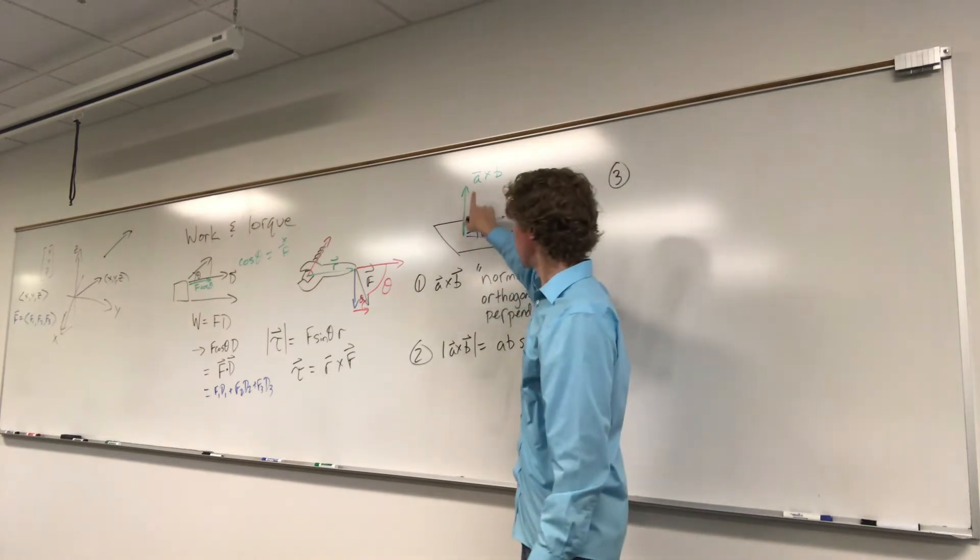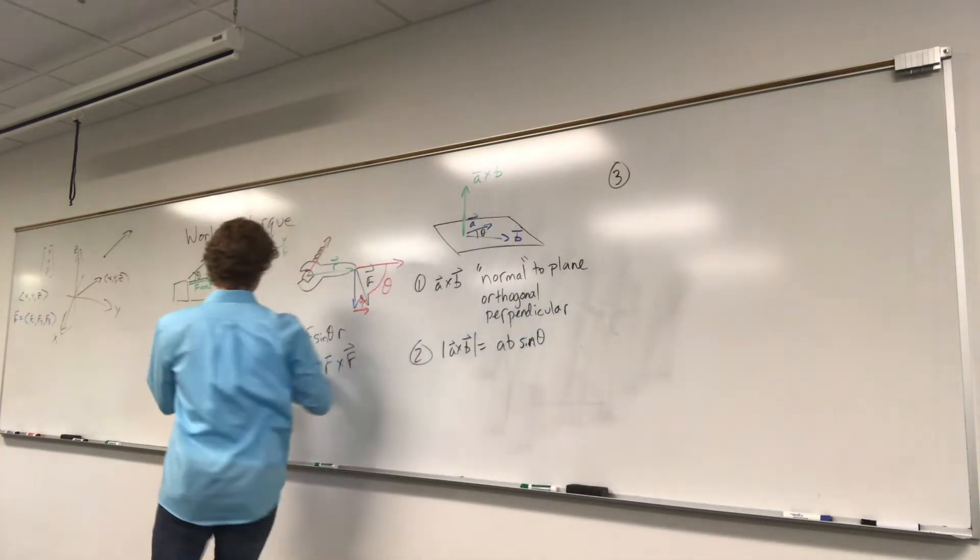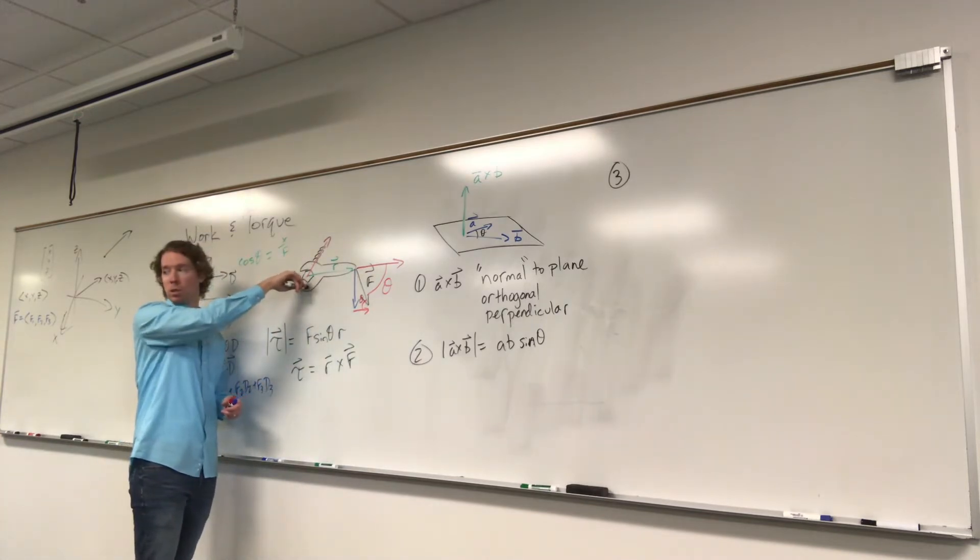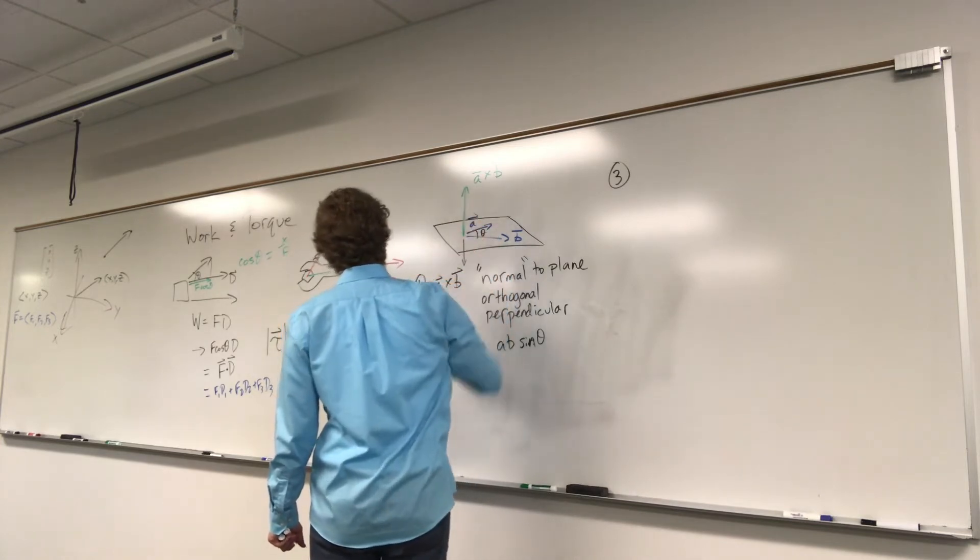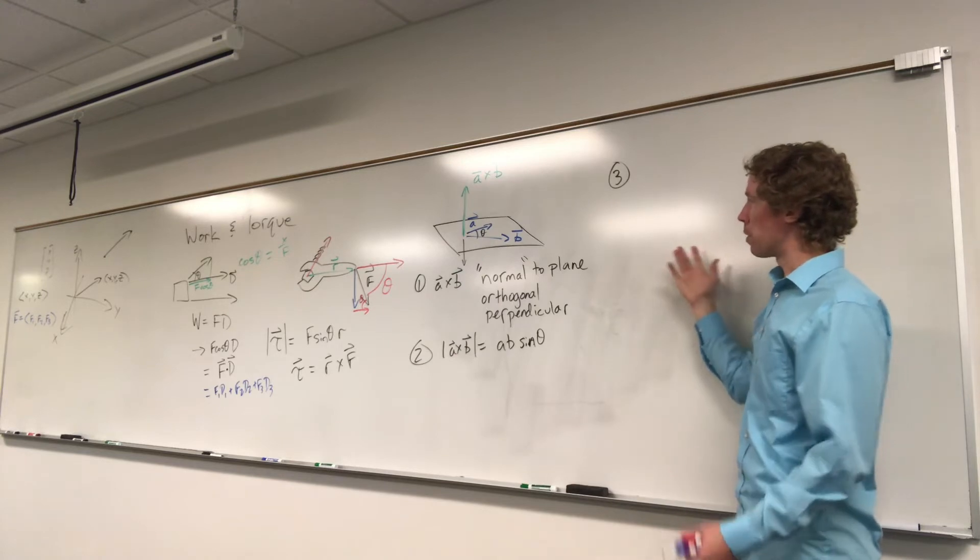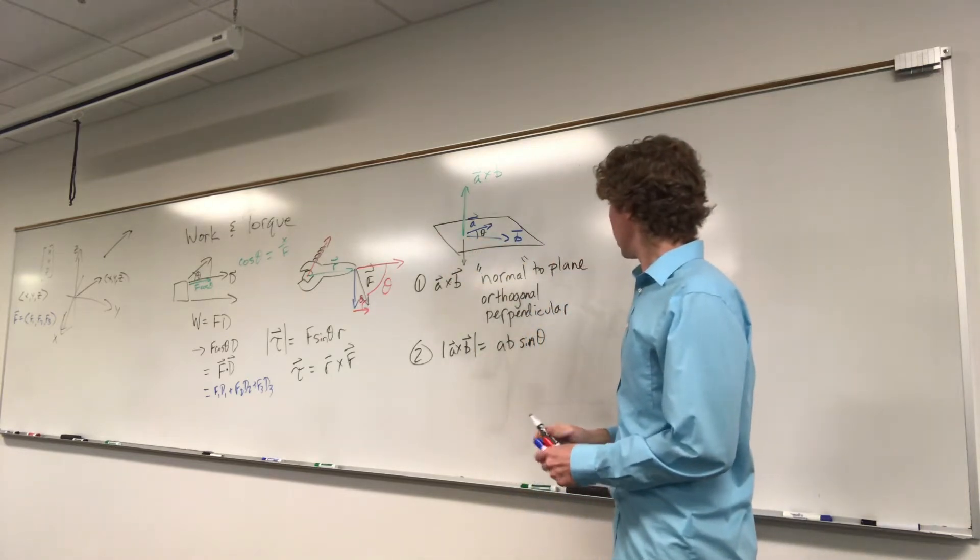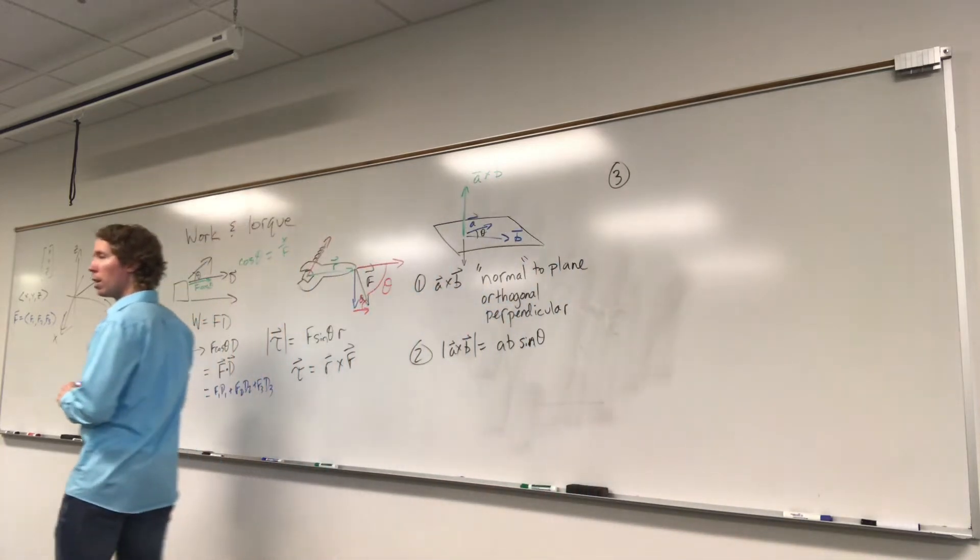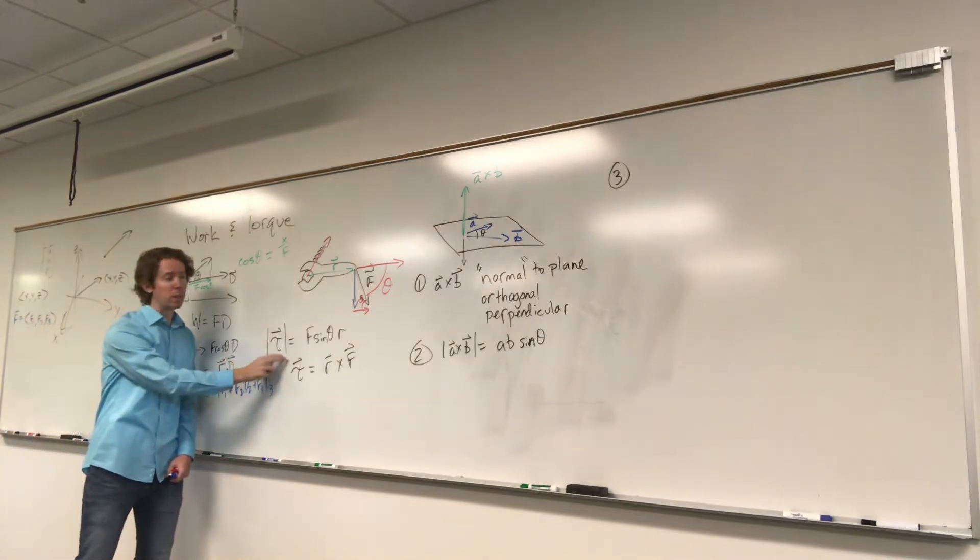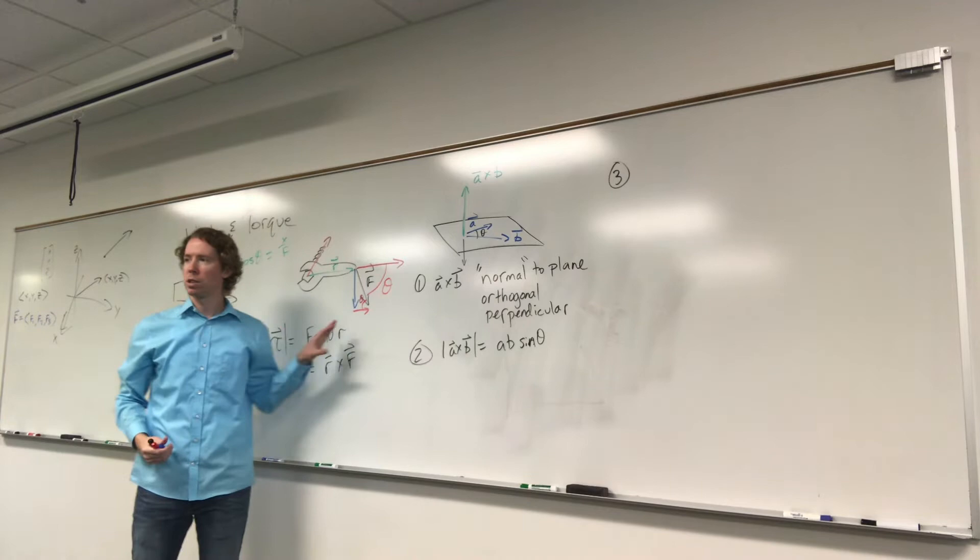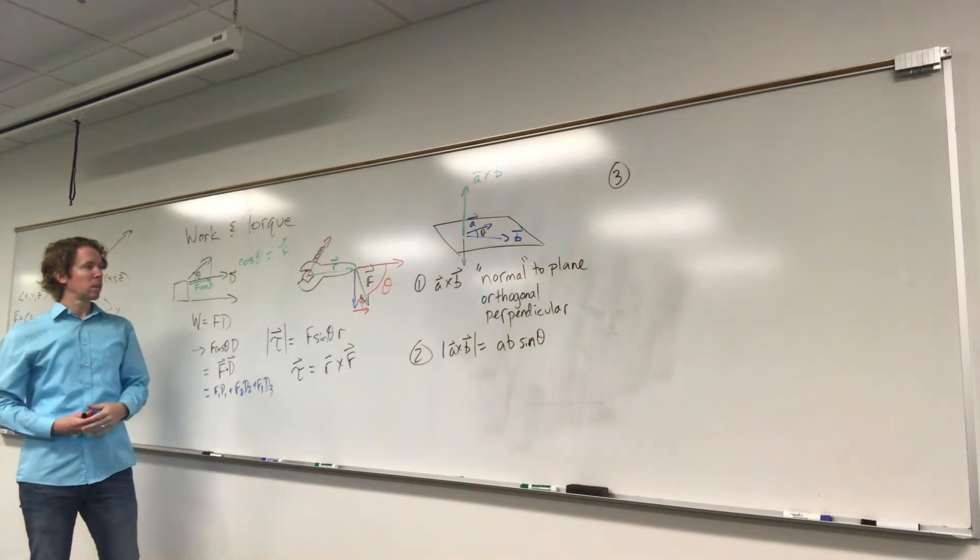Just saying that A cross B is normal to the plane doesn't actually quite give us enough information. Because there's another vector that's orthogonal to this plane or normal to the wall that comes out toward us instead of going in. And then the same thing here, if you take the negative of that vector, it points in the opposite direction. So we need a specific way of saying, are we talking about this direction or are we talking about the opposite direction? I was just curious why A times B is equal to A B sine theta.